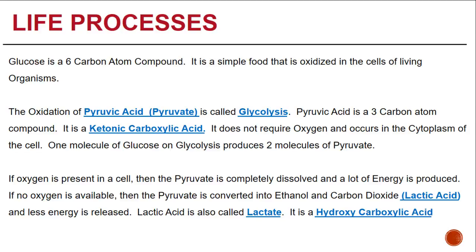Glucose is a six carbon atom compound. It is a simple food that is oxidized in the cells of living organisms. The oxidation of glucose, producing pyruvic acid or pyruvate, is called glycolysis. Pyruvic acid is a three carbon atom ketonic carboxylic acid. It does not require oxygen and occurs in the cytoplasm of the cell. One molecule of glucose on glycolysis produces two molecules of pyruvate.